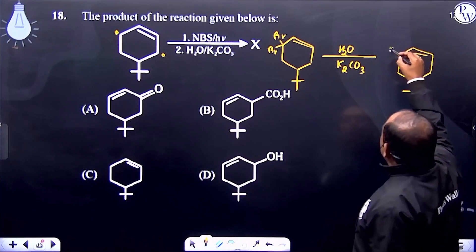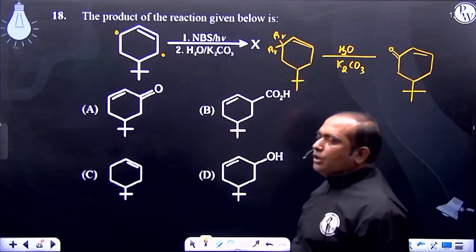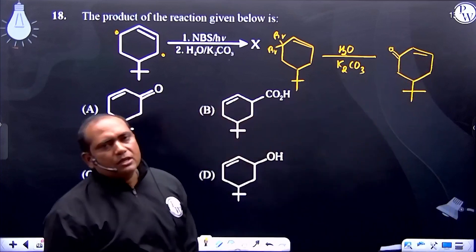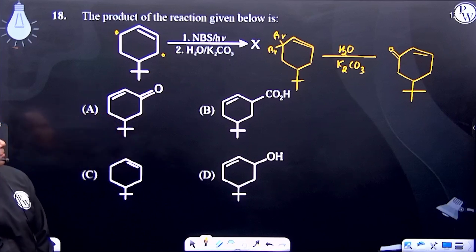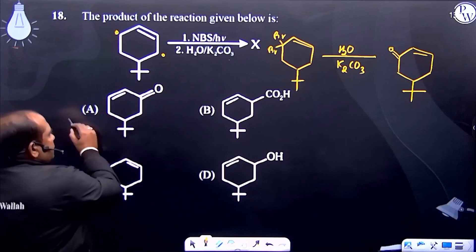OH over here. And we know that more than one OH, highly unstable on same carbon atom, it gets dehydrated to form carbonyl group. So which one is the correct option? Option A is the correct answer.